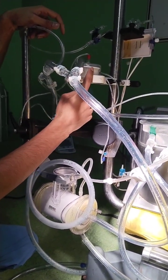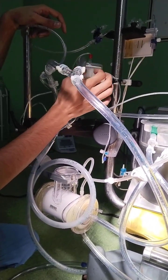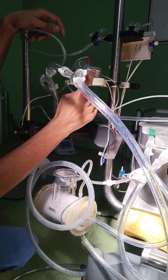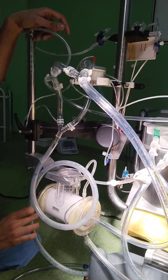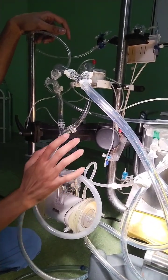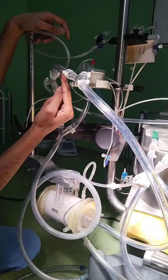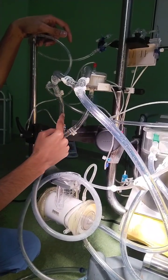At the arterial filter inlet, it will get filtered. From the arterial filter outlet, it will go to the arterial line and arterial cannula to the patient. This arterial filter has a filter bypass line.